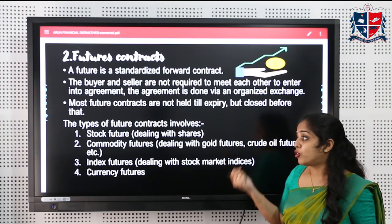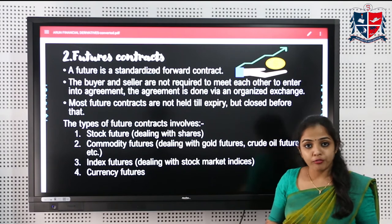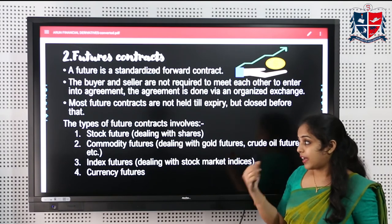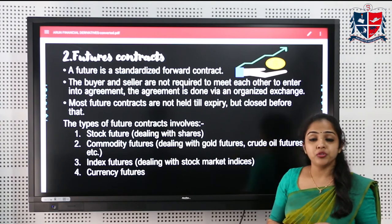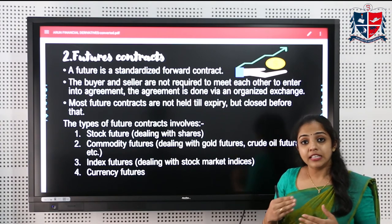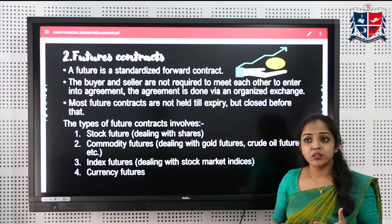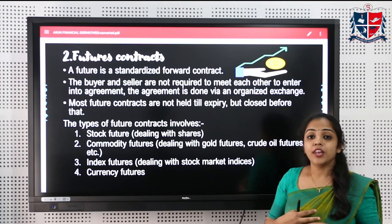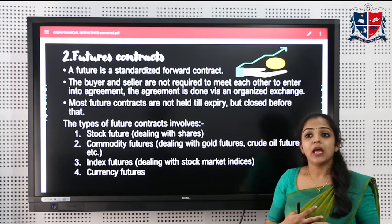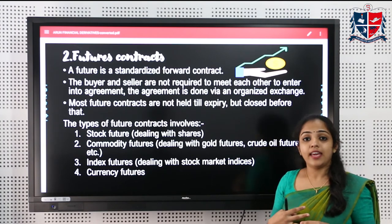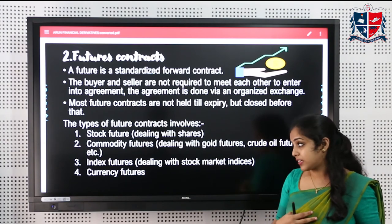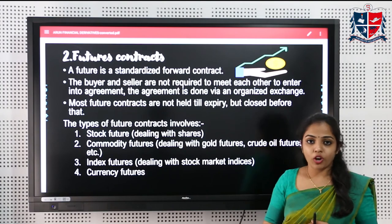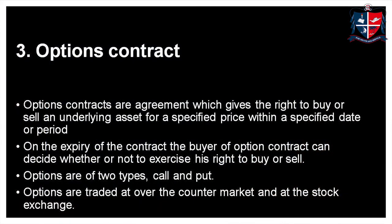There are four types of futures contracts: stock futures (dealing with shares and debentures), commodity futures (where commodities like rubber or gold are the underlying asset), index futures (such as BSE or NSE index futures), and currency futures.